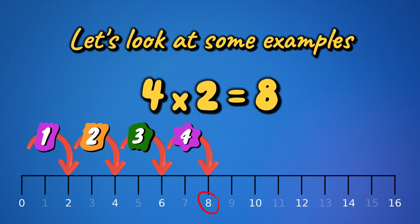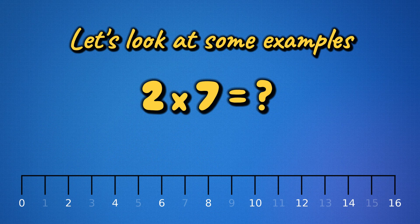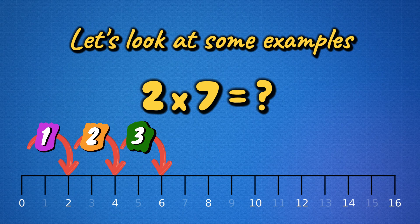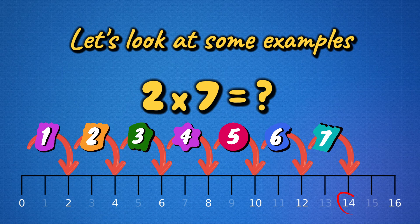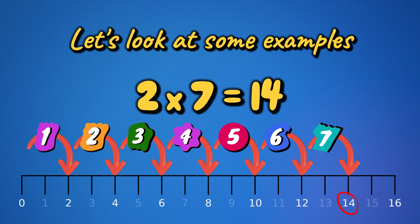Let's do one more like this together. Then I'll have you practice some on your own. What is two times seven? Let's count by twos seven times. Two, four, six, eight, ten, twelve, fourteen. So two times seven equals fourteen.